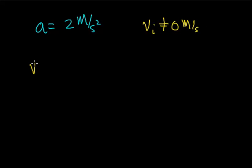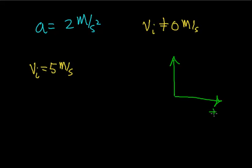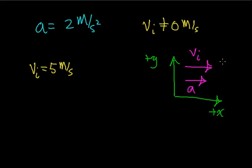Let's begin with an initial velocity of 5 meters per second. We'll assume we have some coordinate system — completely arbitrary — where this is the positive x direction and this is the positive y direction. Let's assume the initial velocity is in the positive x direction, and that the acceleration is in the same direction as the initial velocity, so the object begins to speed up — that is, the velocity is going to be increasing.